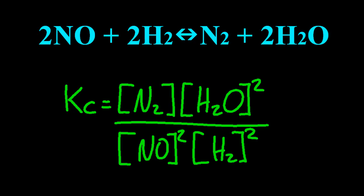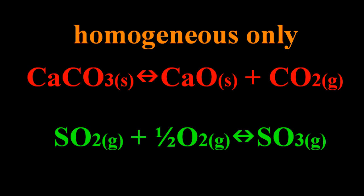Now, we could ask you to do that backwards as well, I suppose. Now, for the IB, we're only going to be using homogeneous equilibria. So that means that the state symbols are the same all the way through for the reactants and products. So we wouldn't ask you to do the top one. The state symbols are different. But at the bottom, yeah, we could do that one.